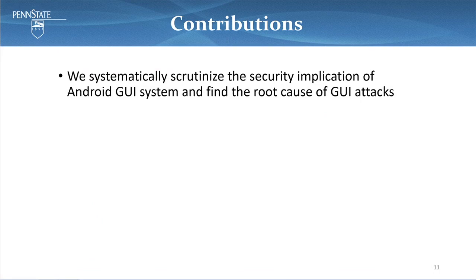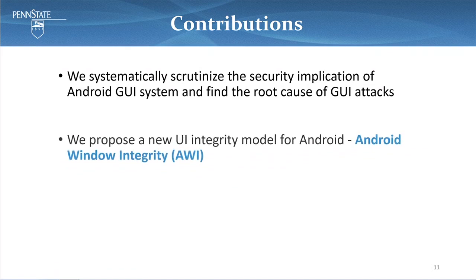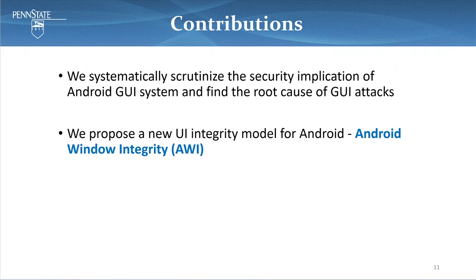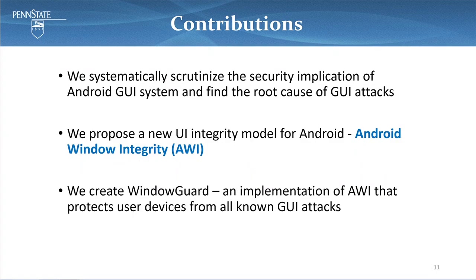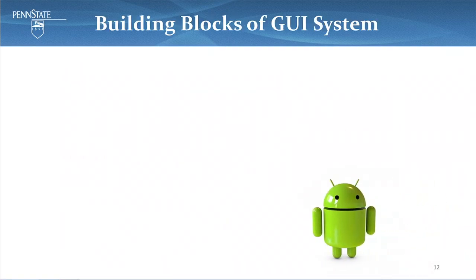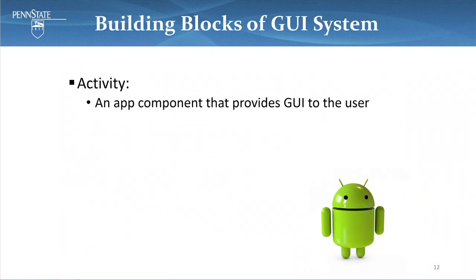So one challenge we face is the lack of complete understanding of the security implications of the Android GUI system. In this work, we try to understand this and find the root cause of GUI attacks. After finding the root causes, we propose a new UI integrity model for Android called Android Window Integrity, or AWI. We then create WindowGuard, an implementation of AWI that protects user devices from all GUI attacks. Before I delve into the AWI details, let me quickly walk you through how the GUI system works.